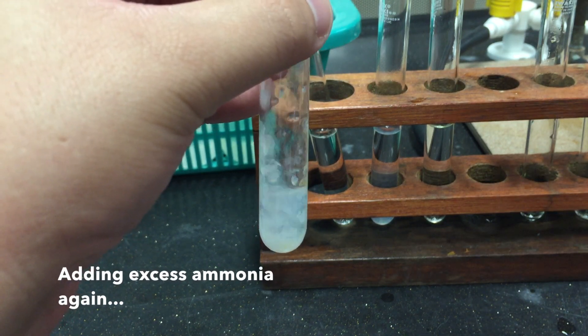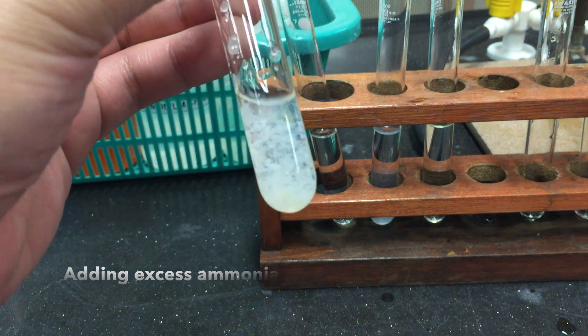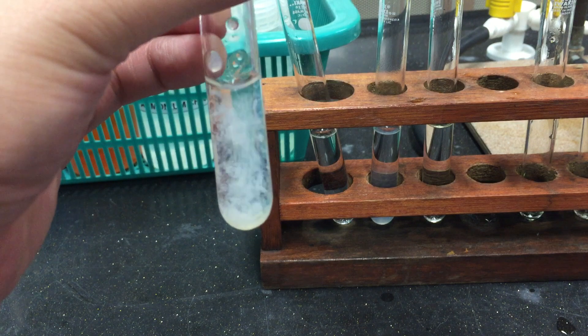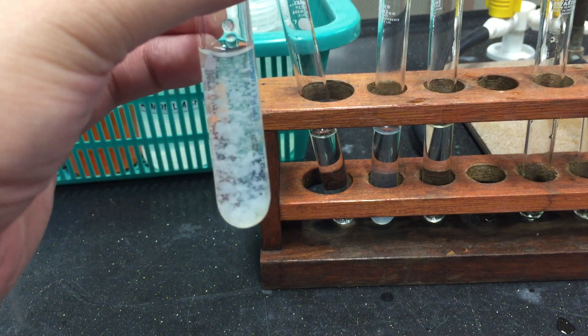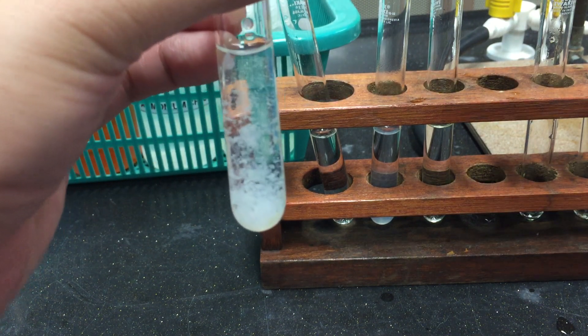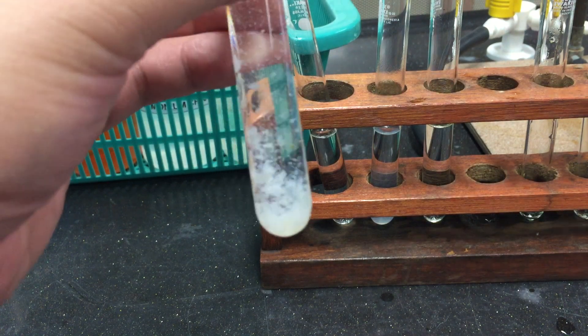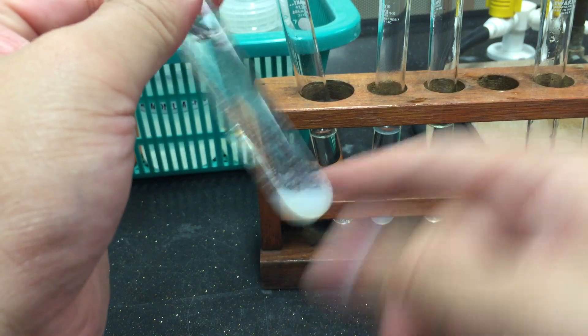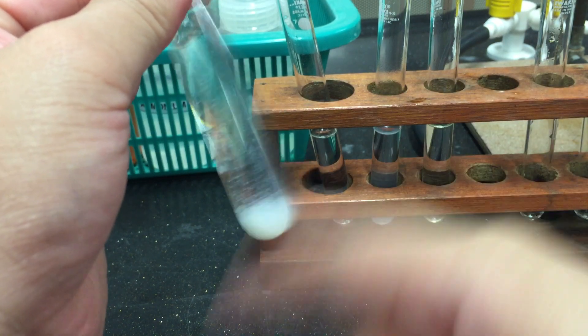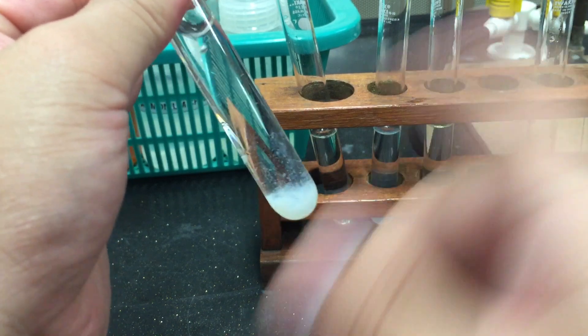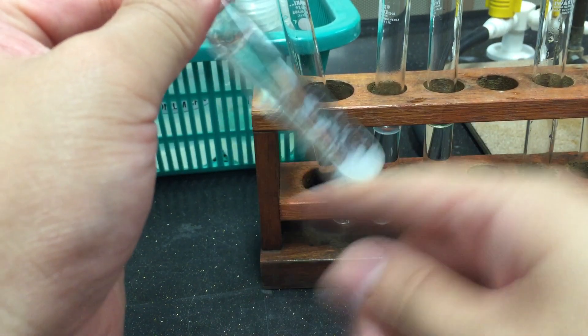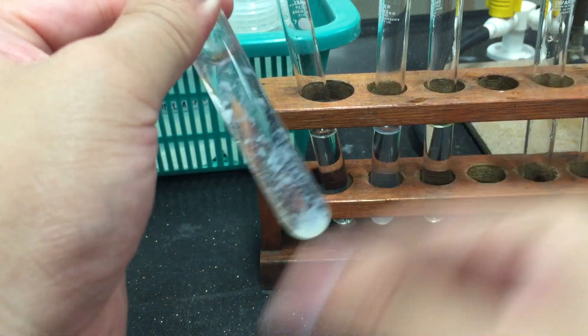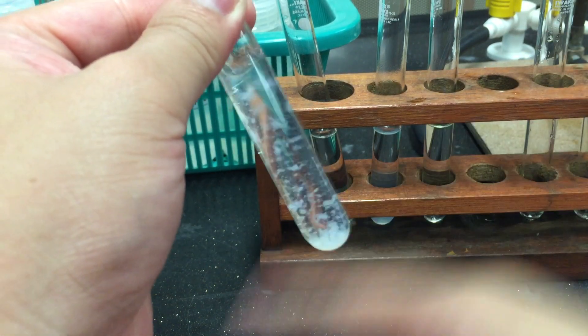You may then proceed to add excess ammonia again. Notice how the white precipitate dissolves in excess ammonia to produce a colorless solution.